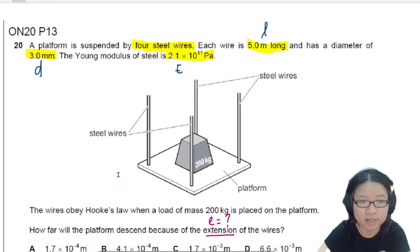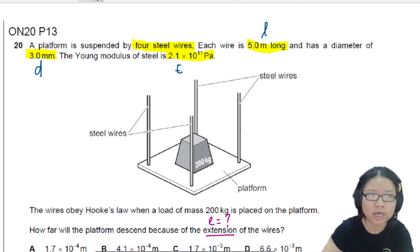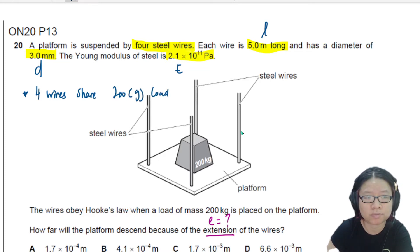First things first, if you look at this situation, your steel wire, four of them work together to support your 200 kg. If I take this arrangement, this is a parallel arrangement. Number one, I can say four wires share the load. Share the 200 times 9.81 load. Not 200 g, 200 times 9.81.